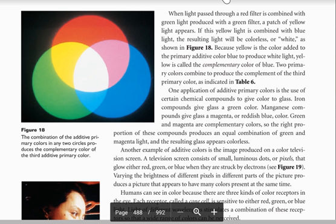Two primary colors combine to produce the complement of the third primary color as indicated in Table 6. One application of additive primary color is the use of certain chemical compounds to give color to glass.